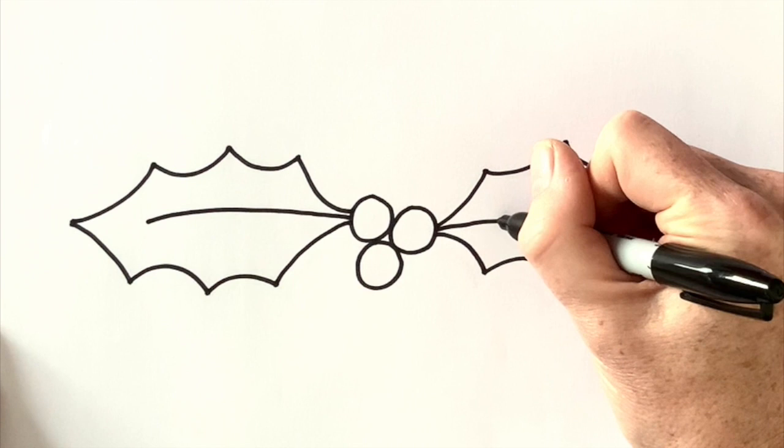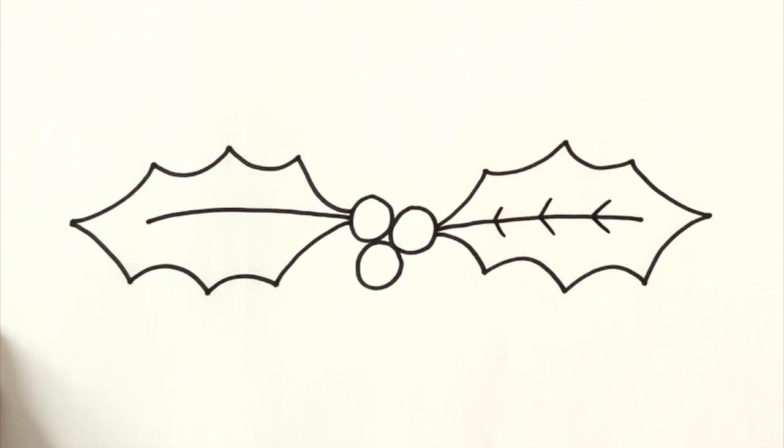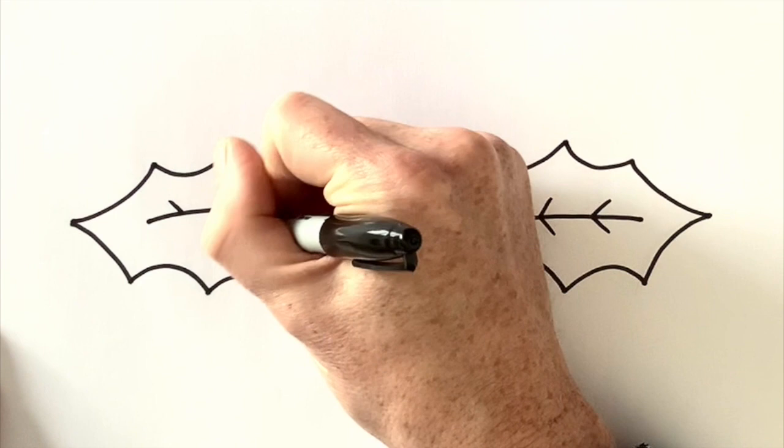And one, two, three lines here, three lines here and the same on this side. One, two, three lines, three more little lines to make the leaves. And what color is holly? It's red and green, isn't it? But can you see I've left a little bit of white on each of the berries to make them look nice and shiny.